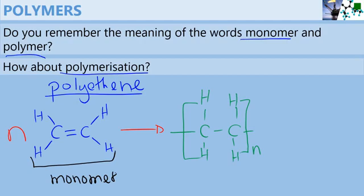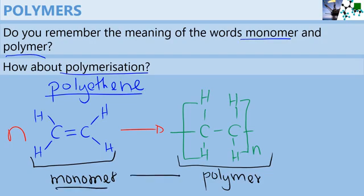And polyethene is the polymer. And the process in which the monomer undergoes to form the polymer is known as polymerization.